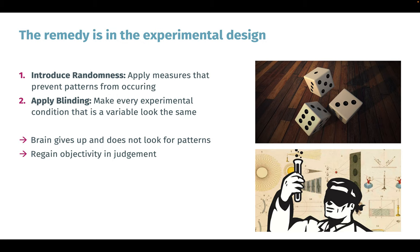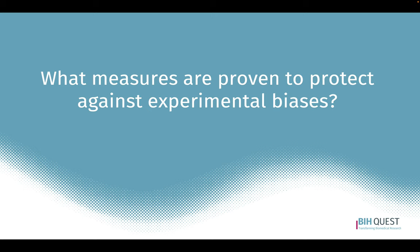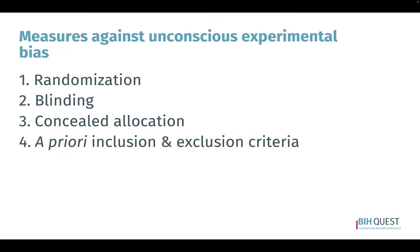The secret is in the experimental design. We introduce randomness and apply measures that prevent patterns from occurring. We apply blinding so that every experimental condition looks the same — it becomes boring and the brain gives up looking for patterns, and we experimenters regain our objectivity in judgment. Four measures are proven to prevent experimental bias: randomization, blinding, concealed allocation of treatment conditions, and a priori inclusion and exclusion criteria.